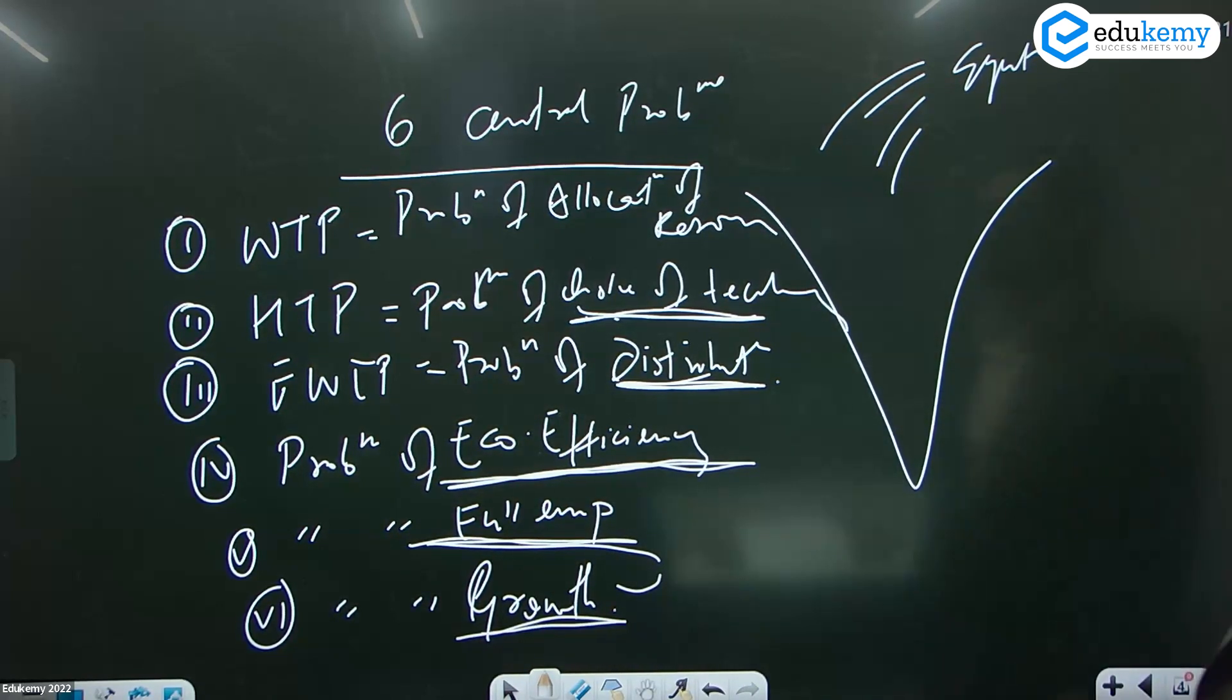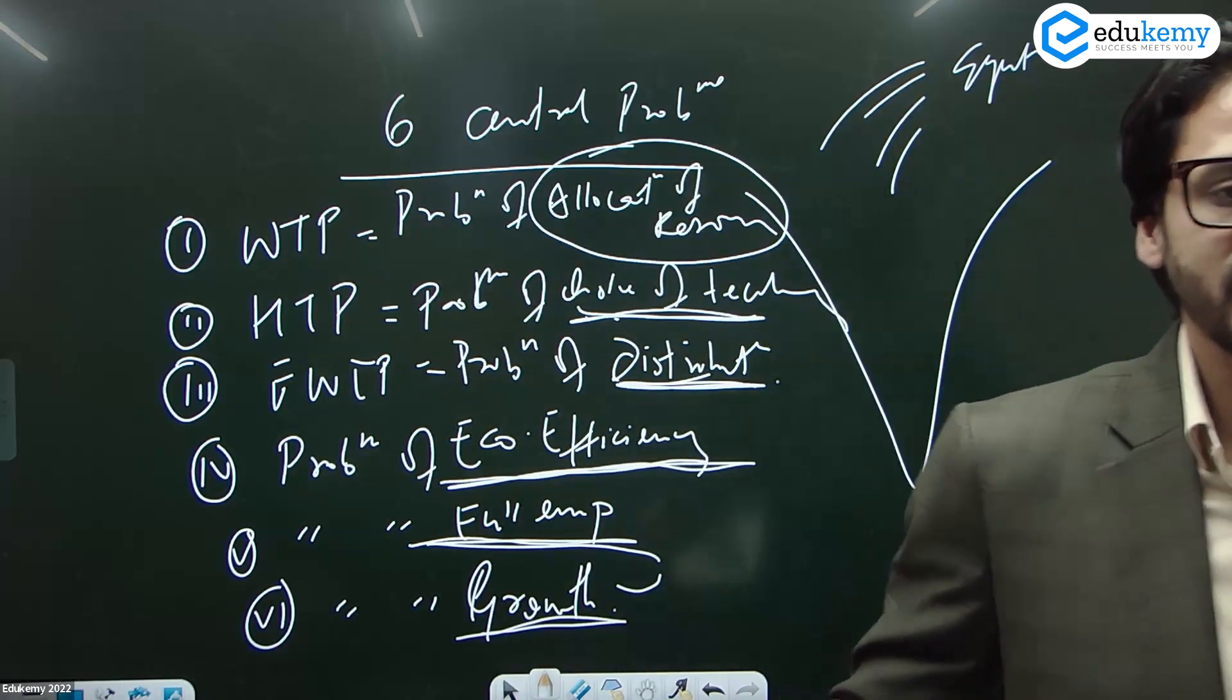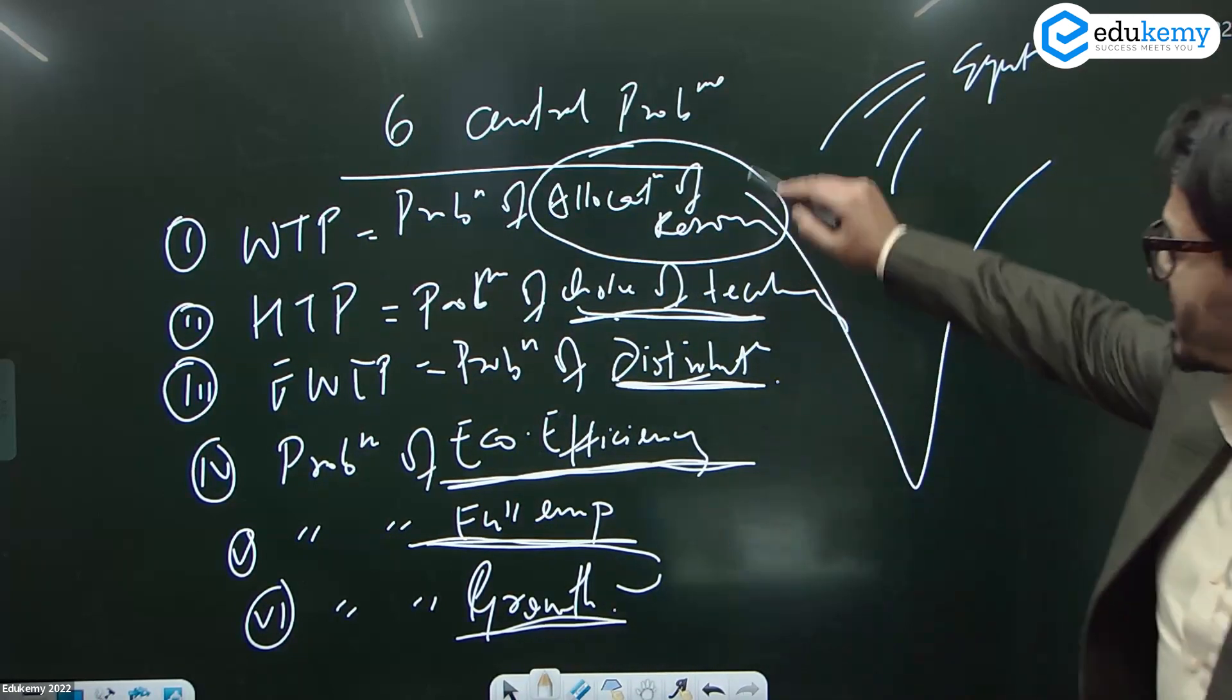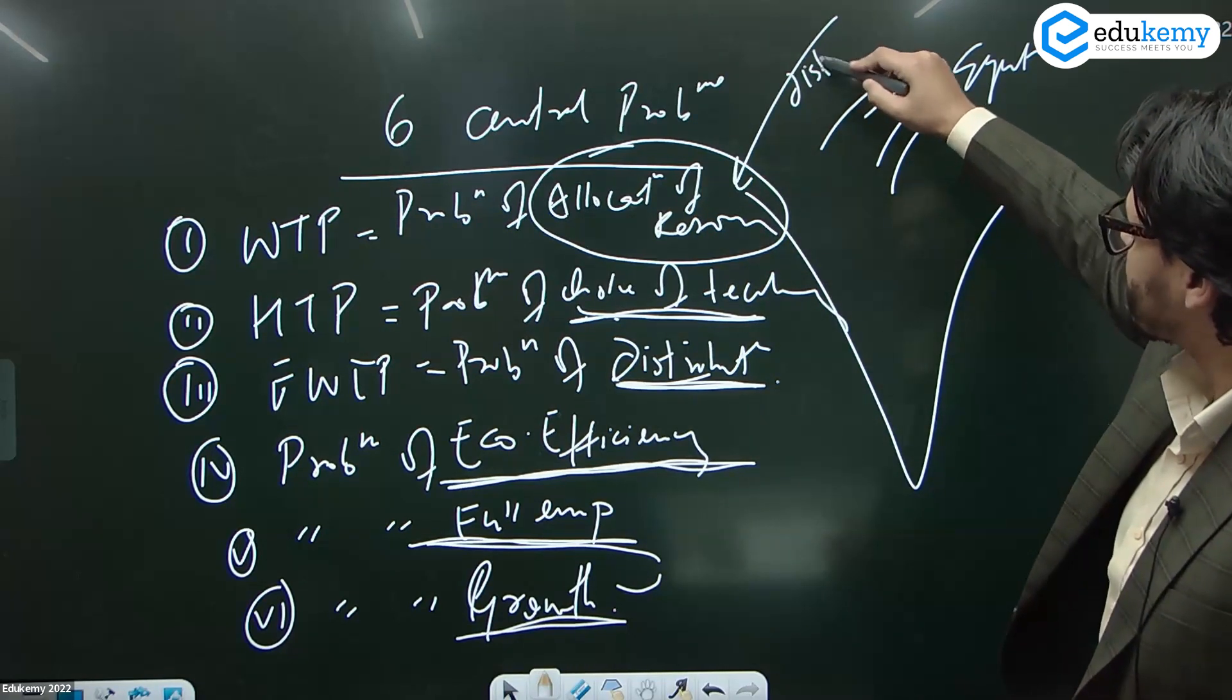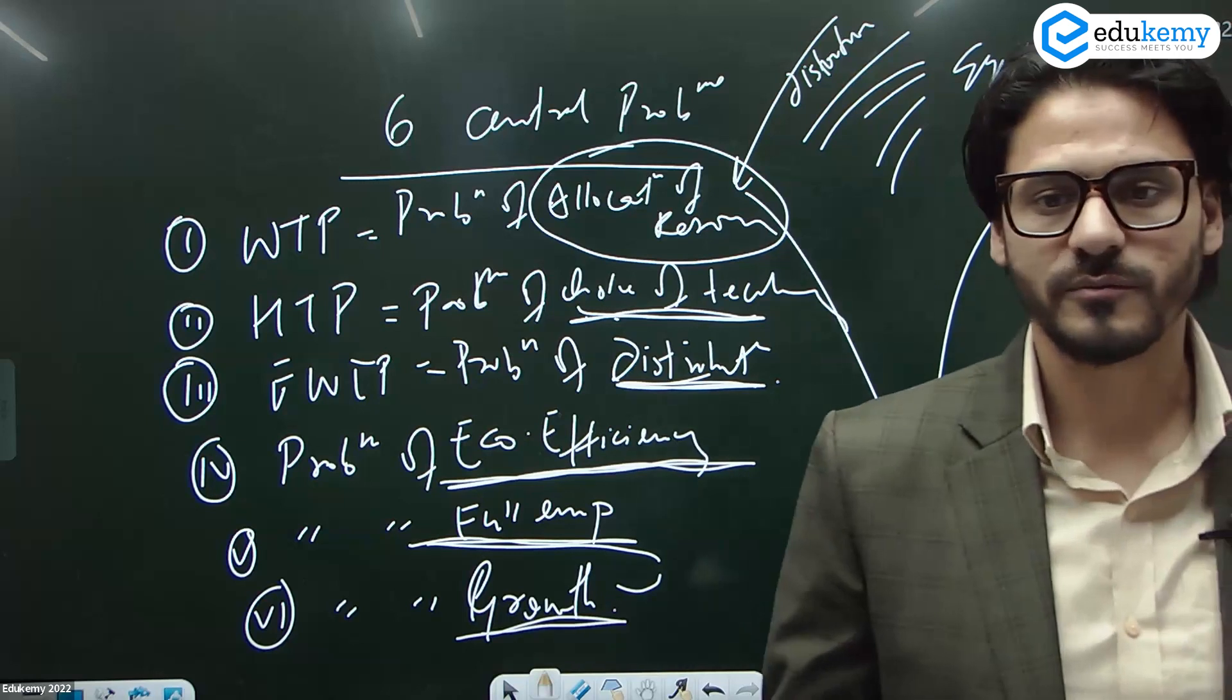The first and most important problem is allocation of resources. Now what we are doing with tax expenditure is we are creating distortion in the first problem of the economy.